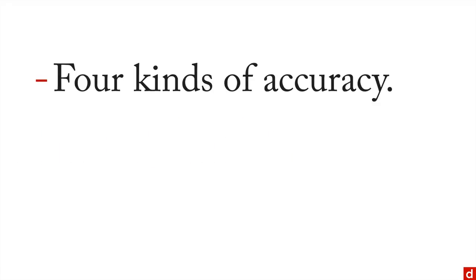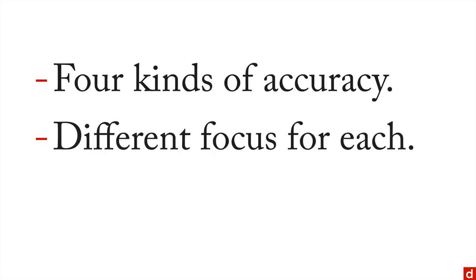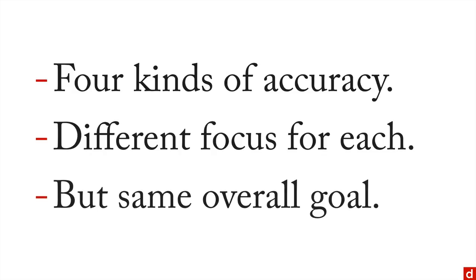So in sum, from these tables we get four kinds of accuracy, and there's a different focus for each one. But the same overall goal: you want to identify the true positives and true negatives and avoid the false positives and false negatives. And this is one way of putting numbers on an index, really, on the accuracy of your measurement.